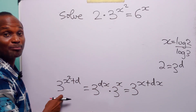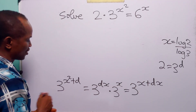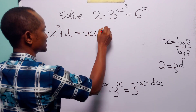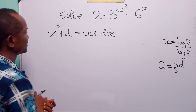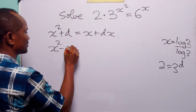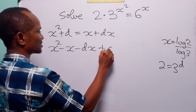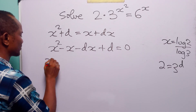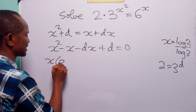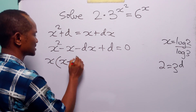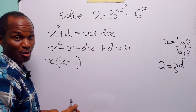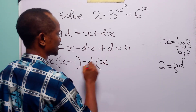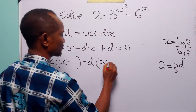Now that we have the same base on both sides of the equation, we can equate the exponents. When we do that, we have x squared plus d is equal to x plus dx. When we rearrange this equation, we have x squared minus x minus dx plus d is equal to 0. Looking at the first two terms, there is a common factor x, so x times x minus 1. Between the remaining two terms, there is also a common factor of minus d — minus dx divided by minus d gives x, and plus d divided by minus d gives minus 1.